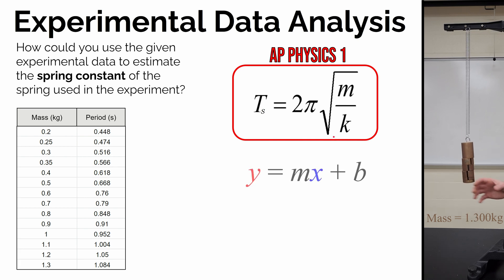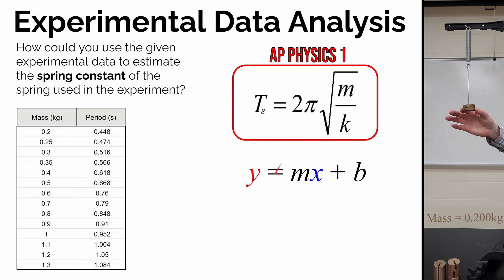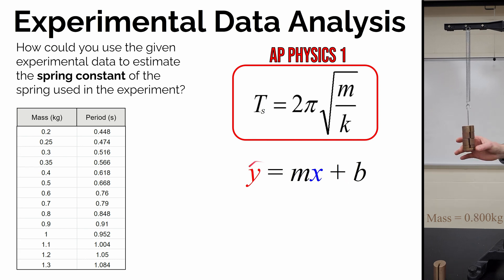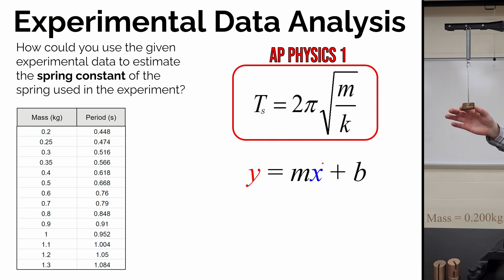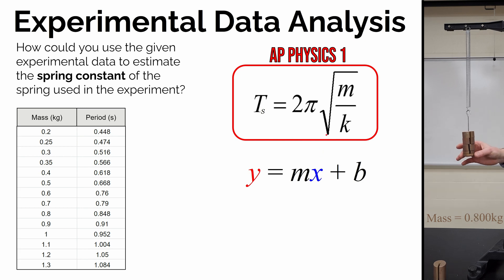If you're going to make a graph that shows a linear relationship, it's going to follow the form y = mx + b. You're always graphing one experimentally measured value on the y-axis and the other on the x-axis. Sometimes that makes a linear relationship, but sometimes it makes a top-opening parabola, an inverse relationship, or a side-opening parabola. So let's look at the equation to figure out what we need to graph to make a line.